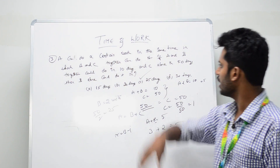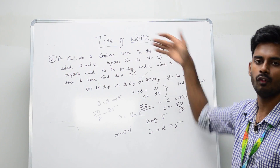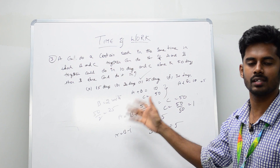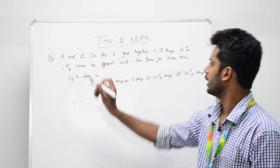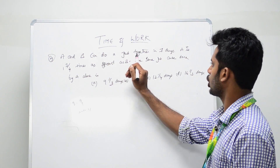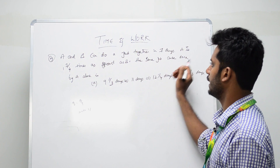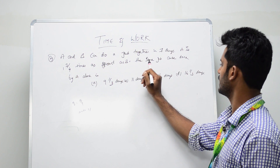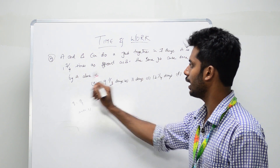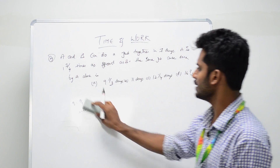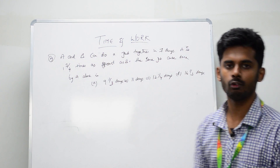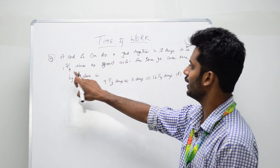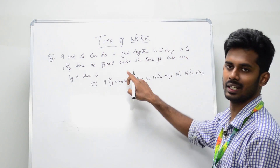Whenever you see this kind of question, go for the LCM, find the individual units, and then solve it. Coming to the fourth question: A and B can do a job together in 7 days. A is 1 and 3/4 times as efficient as B. How many days can A alone do the same job? This is simple but requires working in reverse.